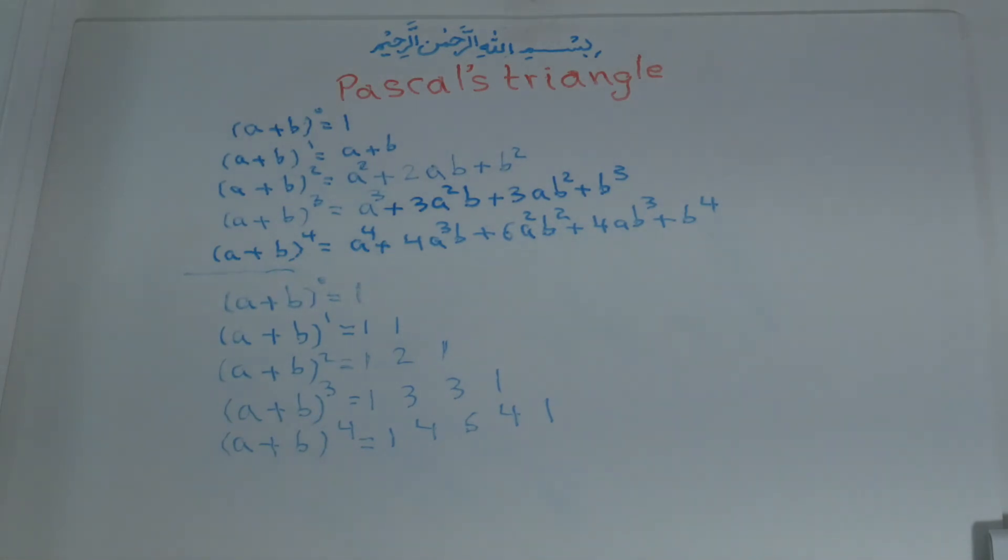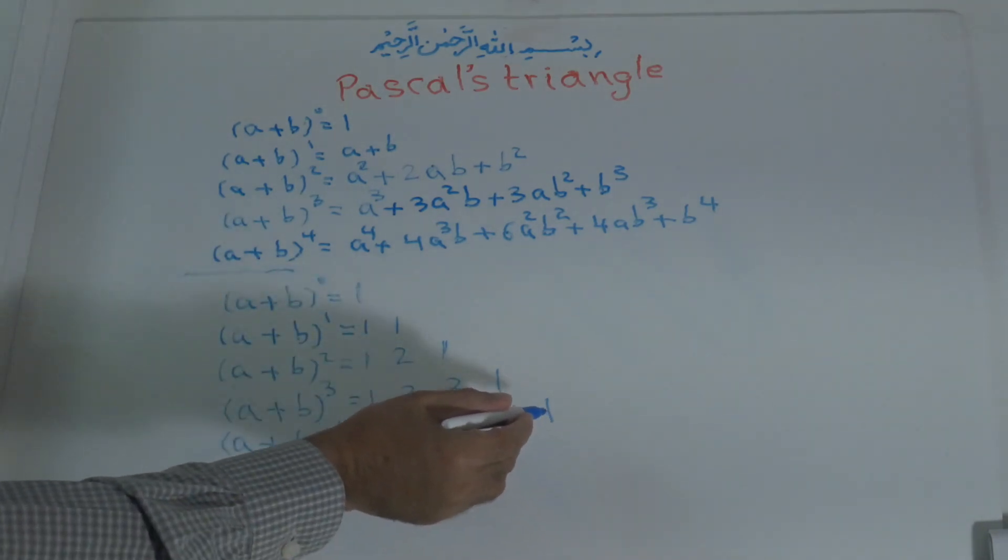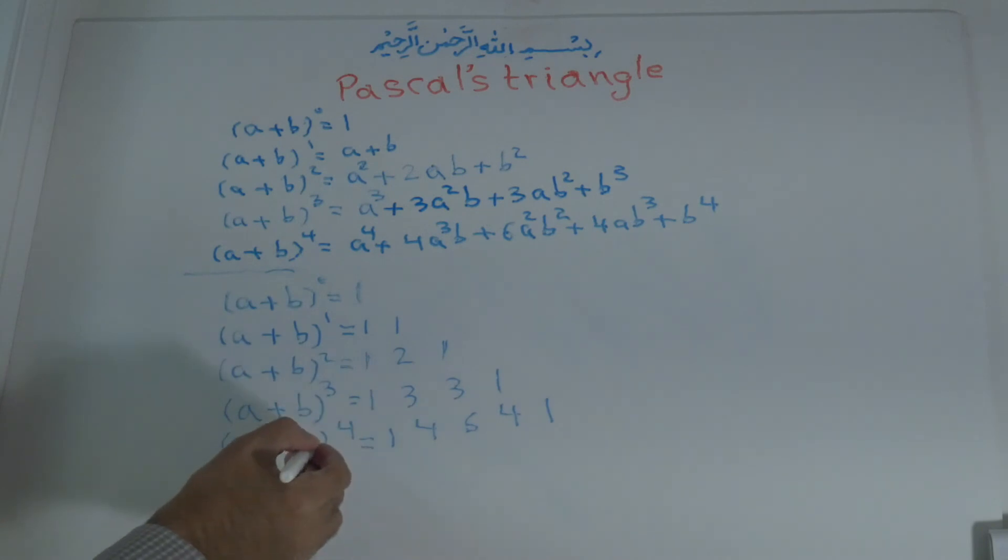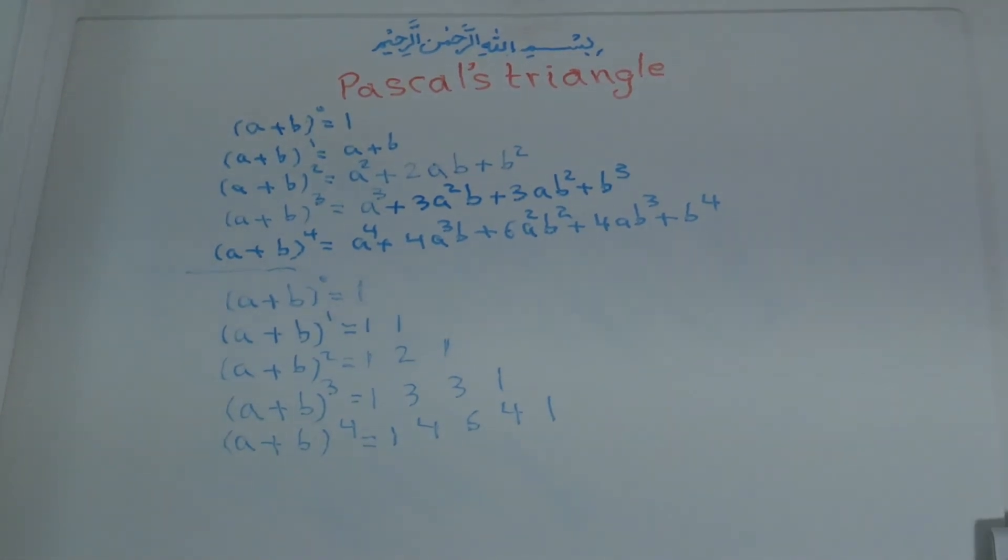We can write like this to the power of 5, 6, 7, 8, 9, and N numbers, a lot of numbers. All of these make a triangle. The figure of this is like a triangle. The first person that noticed this was Pascal. So because of that, they named this the name of Pascal. It means this triangle is called Pascal's Triangle.